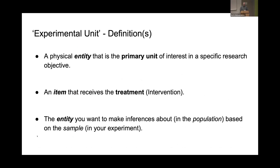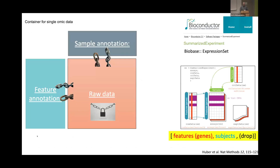Here's the definition. The experimental unit is a physical entity that is the primary unit of interest in a specific research objective — an item that received the treatment or intervention, the entity you want to make inference about in a population based on the sample in your experiment. In my previous talks at this conference, I mentioned object-oriented classes by the Bioconductor community — ExpressionSet — which preserve the experimental unit, meaning with no joins you're able to put together different datasets to do repetitive tasks.